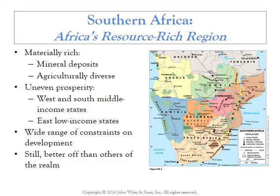The first region is southern Africa, consisting of 10 countries. The book points out that this is a very materially and agriculturally rich region that has really underperformed. The focus of the next several pages is to discuss why this region, so rich in natural resources, is not more prosperous.